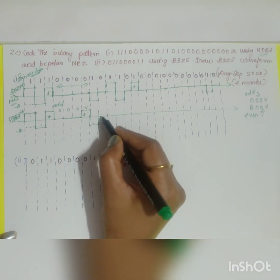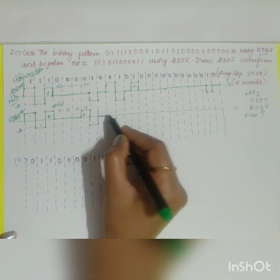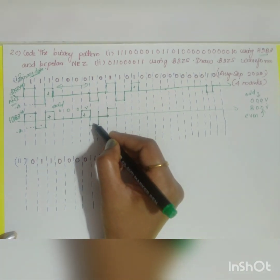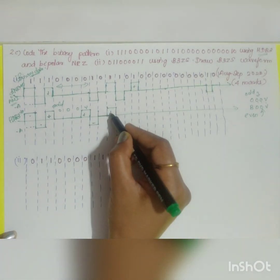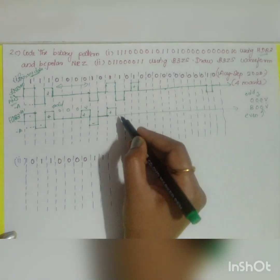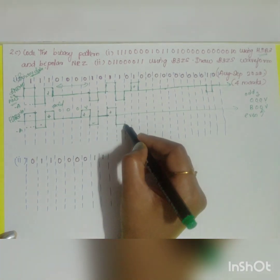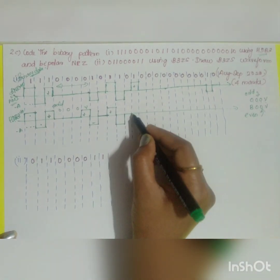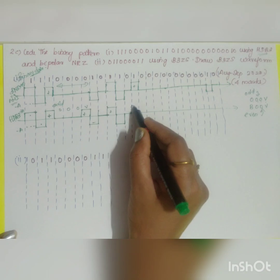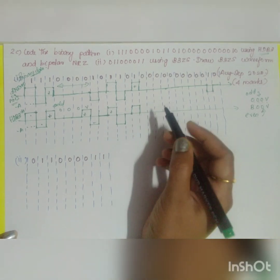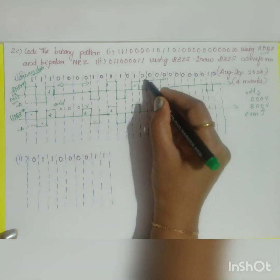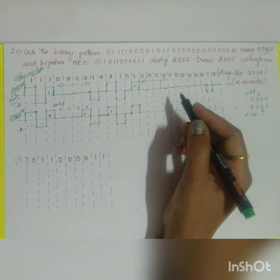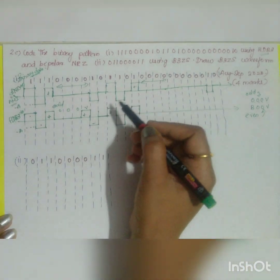Next is zero, so it remains at zero itself. Next is one, and since the previous was negative it will take positive. Then positive, then zero, then negative, then positive, zero. Now you have four consecutive zeros again, so you have to replace them again.